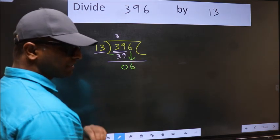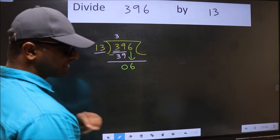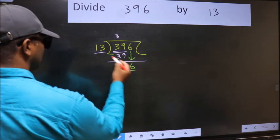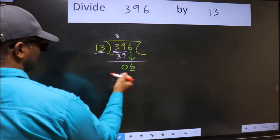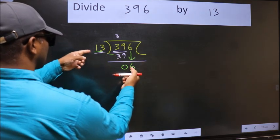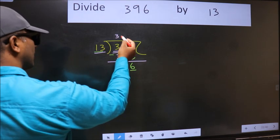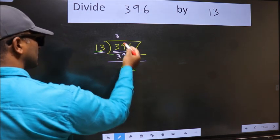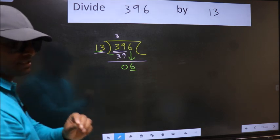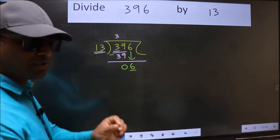And the mistake is this. Here we have 6, and here 13. 6 is smaller than 13. So what many do is they directly put dot and take 0, which is wrong.